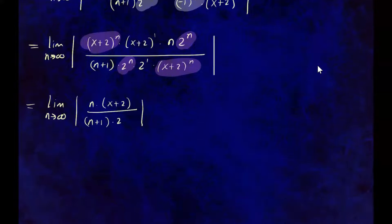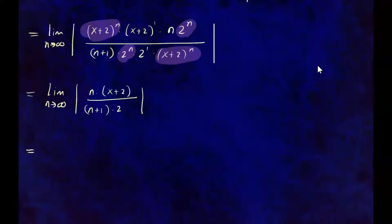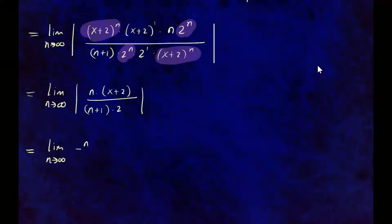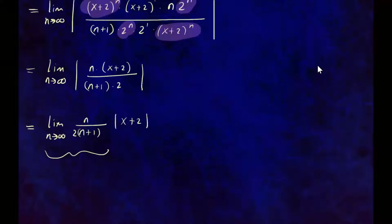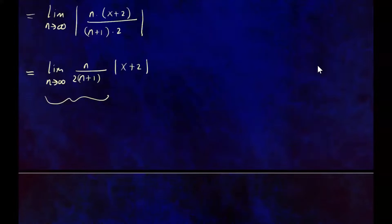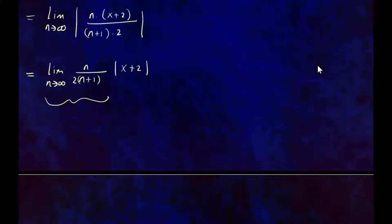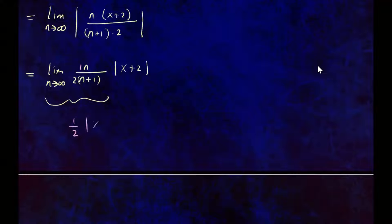Since the limit only involves n, we can separate it and drop the absolute value for the n variable, since n goes to infinity and everything will be positive. So we have the limit as n approaches infinity of n over n plus 1 times 2, times the absolute value of x plus 2. Since the numerator and denominator have the same degree, the limit equals the ratio of their leading coefficients: 1 over 2. So the result is 1 over 2 times the absolute value of x plus 2.